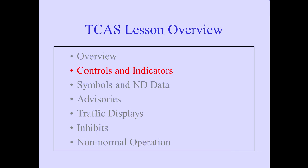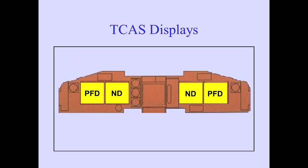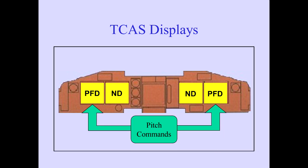Let's now discuss the controls and indicators. The EFAS control panels and the ATC transponder panel control the display of TCAS information. TCAS pitch commands are displayed on the PFD. TCAS messages and symbols are displayed on the ND.